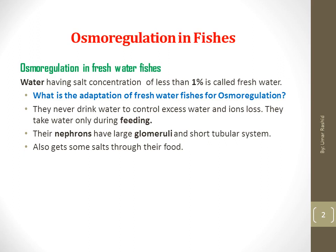The osmoregulatory mechanism in freshwater fishes includes several key points. Freshwater fishes never drink water to control excess water and ion loss; they take water only during feeding. Their nephrons have large glomeruli and a short tubular system, and they also get some salts through their food. The large glomeruli and short tubular system help in reabsorption of some ions and organic compounds after filtration. Because of the short tubular system, little water is reabsorbed, and therefore these fishes produce a very large quantity of dilute urine.